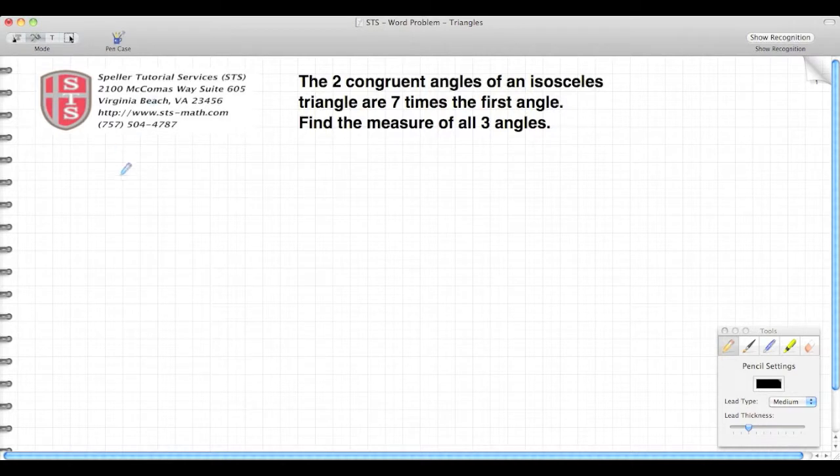I normally start off all word problems with a picture if possible. In this case, I'm going to draw an isosceles triangle. The properties of an isosceles triangle are two congruent sides and two congruent angles.